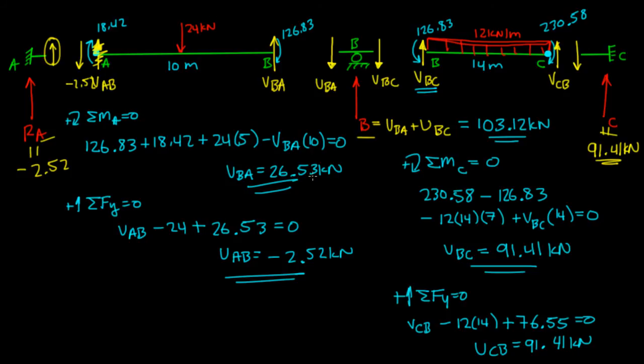Alright, welcome back. In this video we're actually going to draw the shear and moment diagram, but before I do that, we need to figure out a couple more reactions here at A and C. Let's do C first really quick. So at C, we have this moment, this 230.58 moment going this way. That means at C, that same moment is going to go this way.